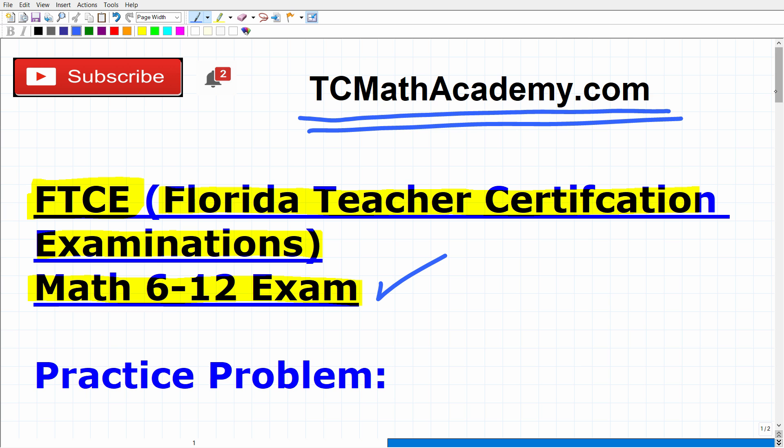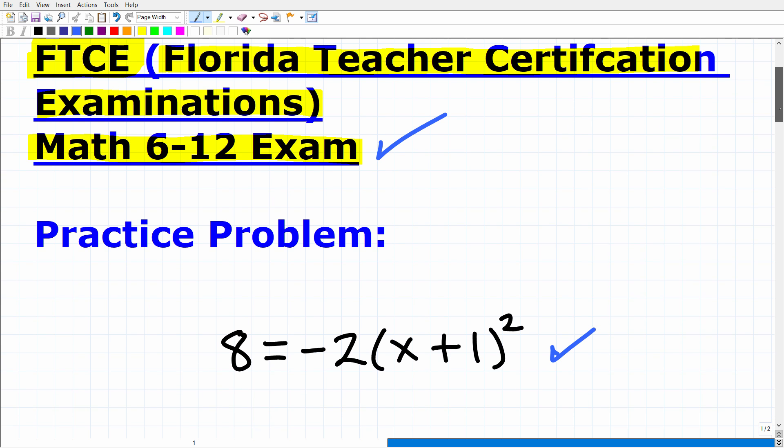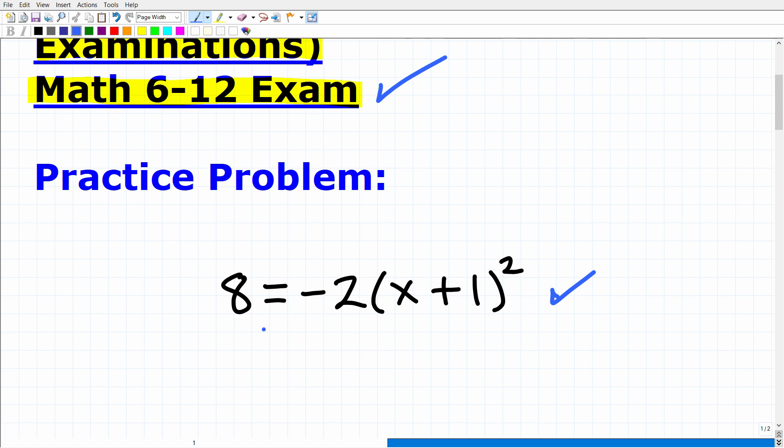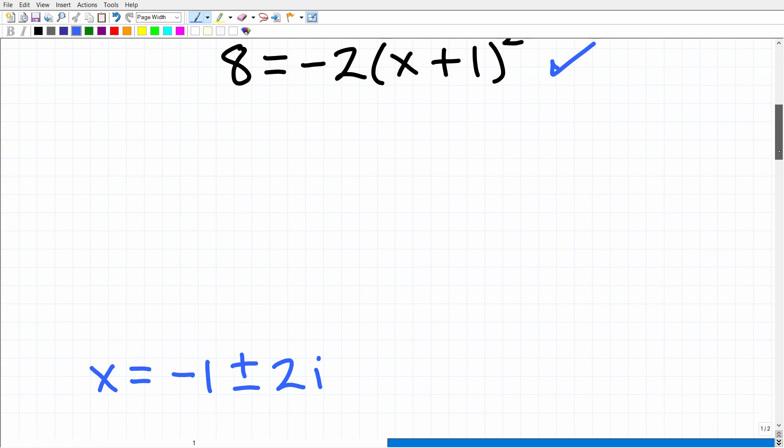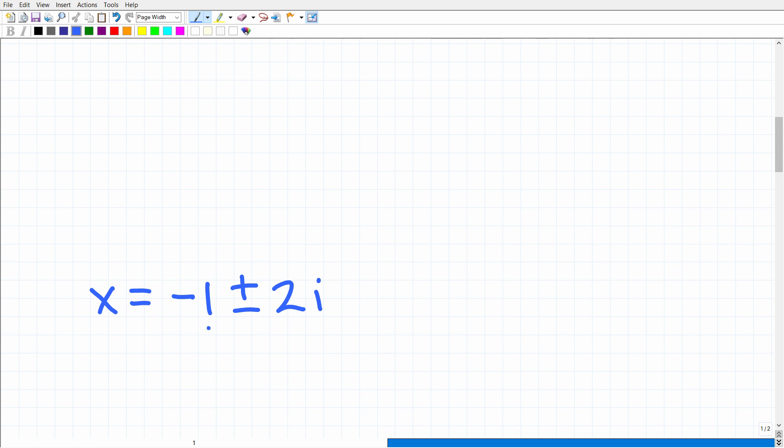Okay, so let's get into this problem. The practice problem should be very easy for you. 8 equals negative 2 times (x + 1) squared. The correct answer is x equals negative 1 plus or minus 2i. Obviously, we have a complex number solution in the form of a + bi.